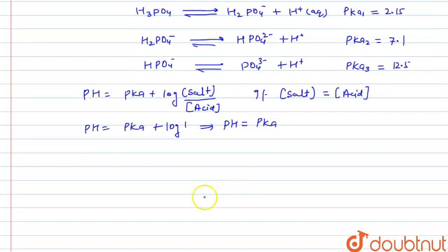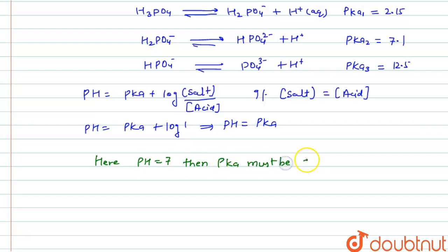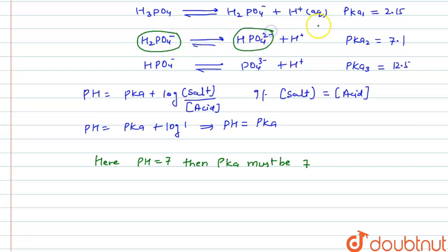Since pH = pKa when concentrations are equal, pKa must be 7. Looking at our dissociation steps, the reaction with pKa equal to 7 gives us the conjugate acid-base pair H2PO4⁻ and HPO4²⁻.